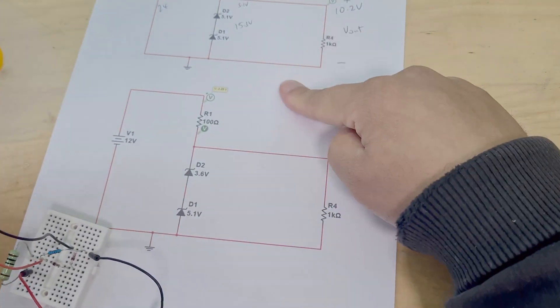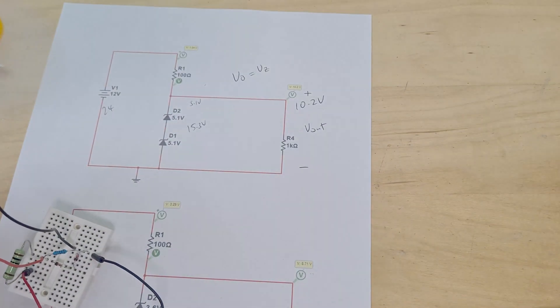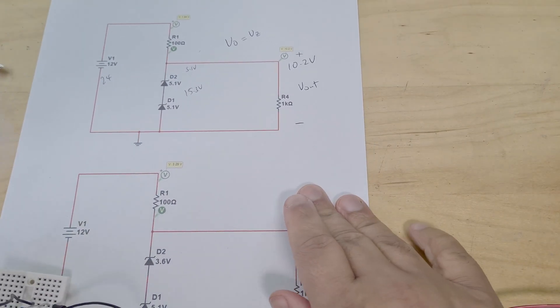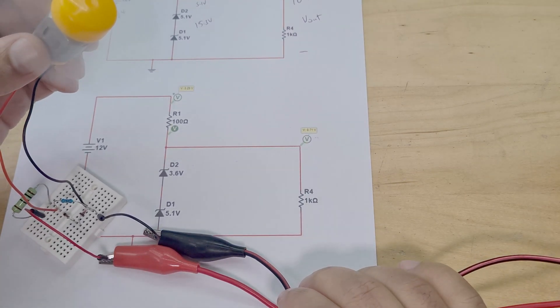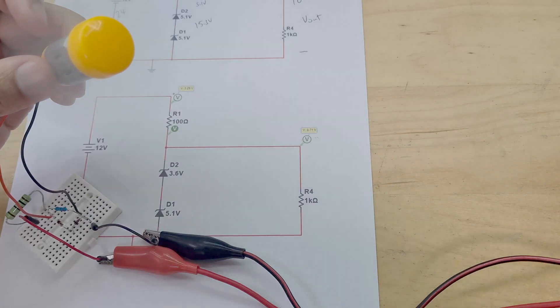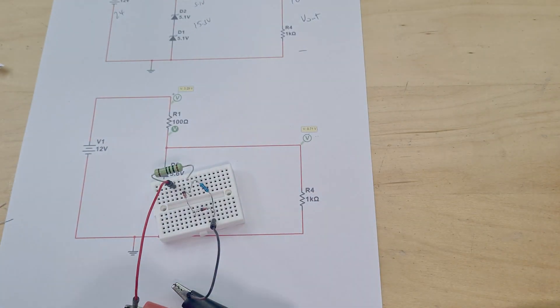So let's do the next one. So that was this one up here. 5.1, 5.1. So we'll do the same. Just swap out the top Zener diode with a 3.6 volt Zener diode. And we should get 8.7, 8.9 volts. So it's as simple as take out a 3.6 volt. Okay. And now let's read the voltage.